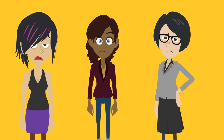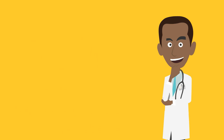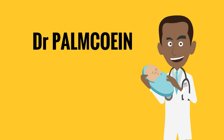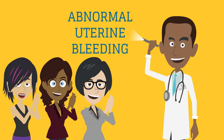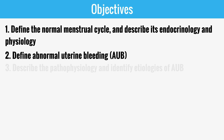Abnormal uterine bleeding accounts for more than 70% of all gynecological consults for perimenopausal and postmenopausal women. Meet Dr. Palm Cohen, obstetrician-gynecologist extraordinaire. In this video, we will discuss normal menses and how Dr. Palm Cohen can help women with abnormal uterine bleeding. The objectives are to define the normal menstrual cycle and its endocrinology and physiology, define AUB, define the pathophysiology and possible etiologies of AUB, define the evaluation and management steps for AUB, and summarize the medical and surgical options for AUB.